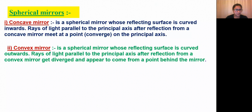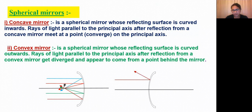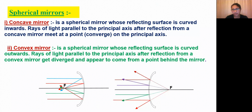Let us understand the difference between concave and convex mirrors. Rays of light parallel to the principal axis, after reflection from a concave mirror, meet at a point on the principal axis. But in a convex mirror, rays of light parallel to the principal axis, after reflection, get diverged and appear to come from a point behind the mirror.